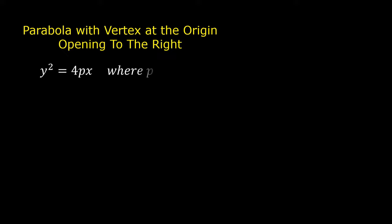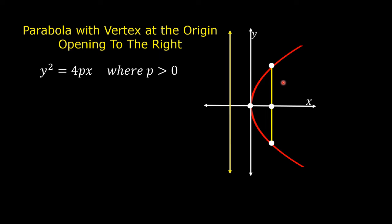The equation of a parabola with vertex at the origin and opening to the right is in the form y squared is equal to 4px, where p is greater than 0. In this figure, this is a parabola opening to the right.